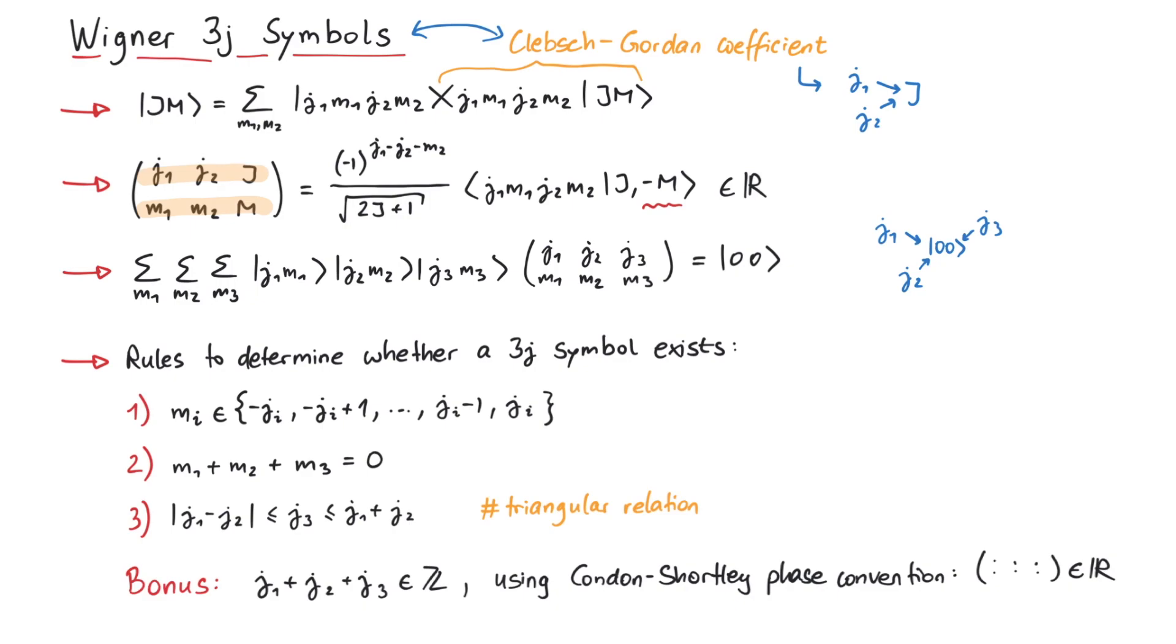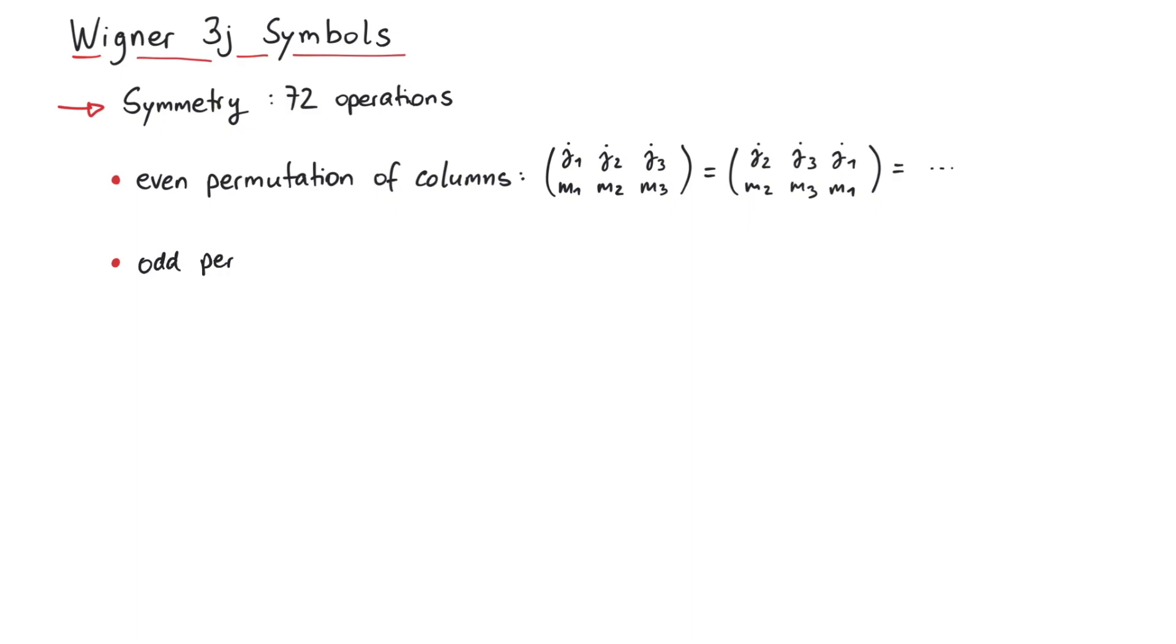Now let's talk about the main reason why we use the 3j symbols, symmetry. In fact, you can perform 72 symmetry operations on a 3j symbol, which all leave it invariant. Let us now go through all of them. First, if you do an even permutation of the columns, the value of the symbol will not change. You can also do an odd permutation, but in that case you have to multiply a phase factor.